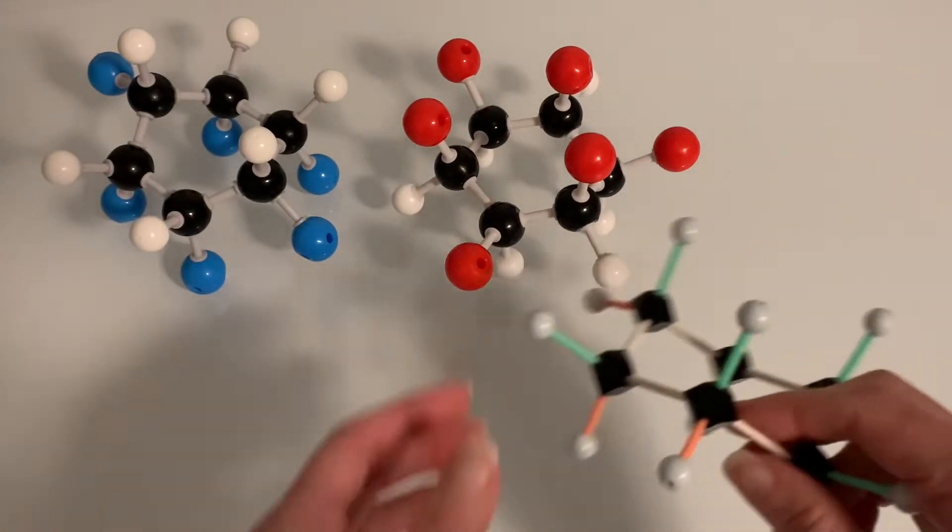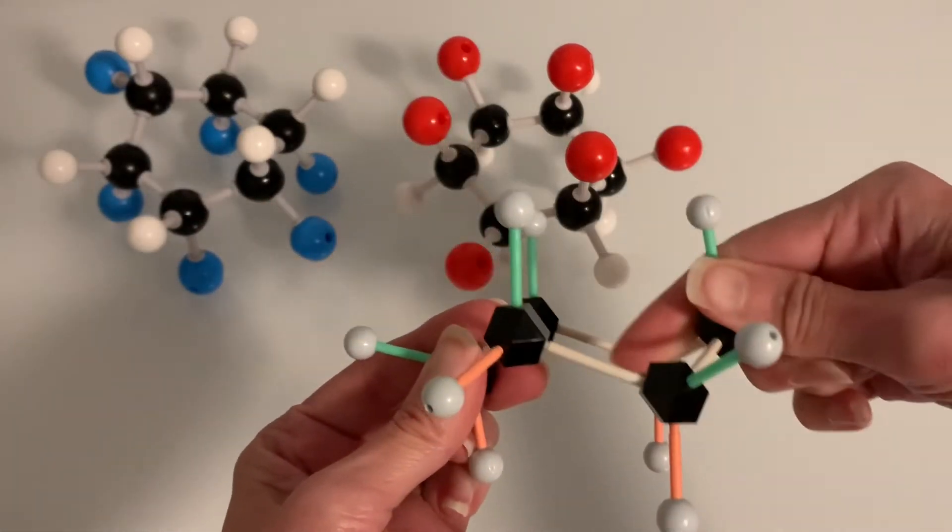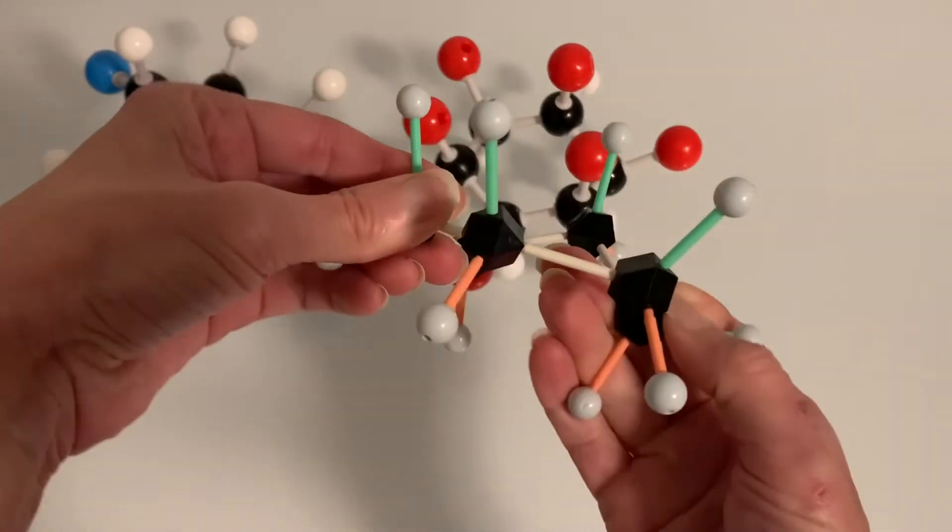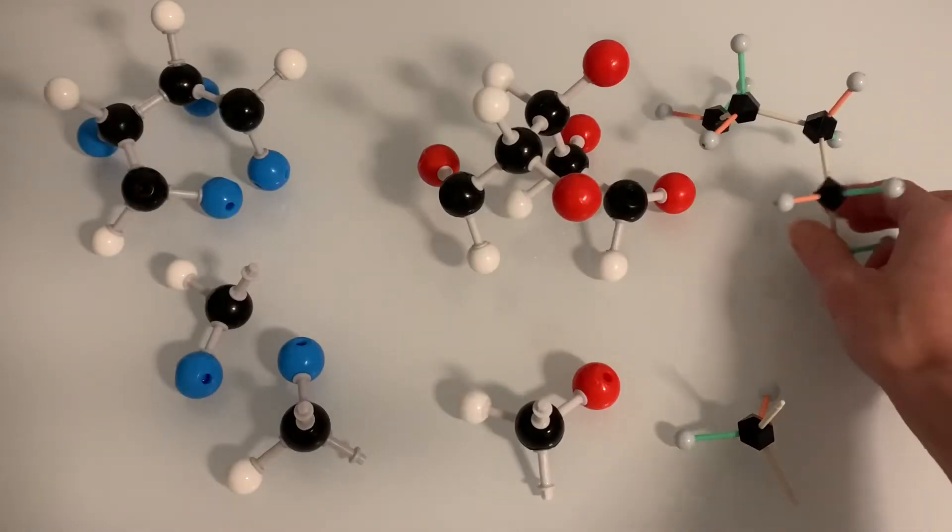And then last this is the cyclohexane model that I built using the HGS set. You can see there's even more stiffness in these bonds. The molecule is really holding its shape well. This is a great set for viewing bond angles and different conformations of molecules.